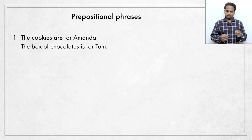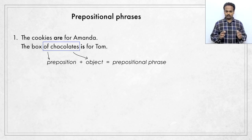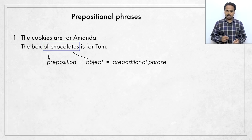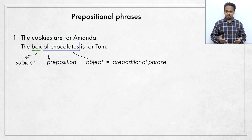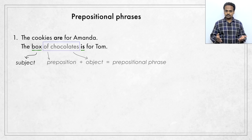But in the second sentence, we have box of chocolates. Here we see a preposition of, and we see that it has an object, chocolates. So, of chocolates is a prepositional phrase. This phrase gives information about the box. It tells us what type of box it is — a box which has chocolates inside. So, the real subject of this sentence is the box. This is a singular noun, that's why we have is. The prepositional phrase is just extra information, so you can mentally block it out. The cookies are for Amanda, the box is for Tom. What box? The box of chocolates.